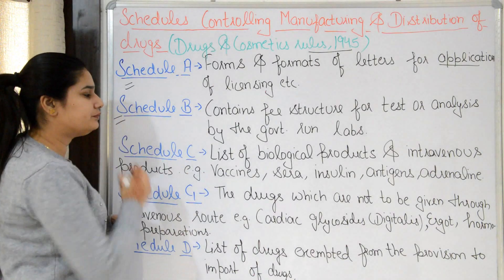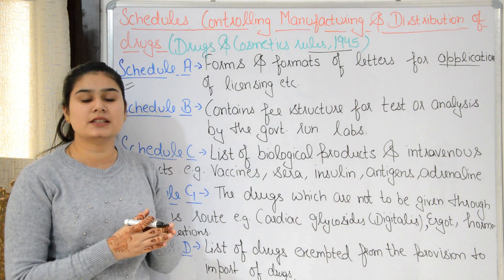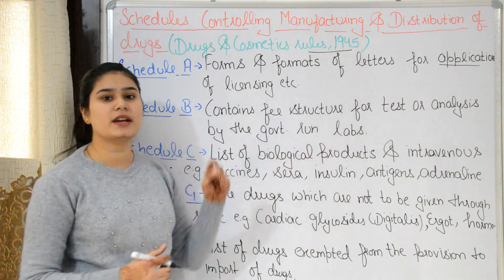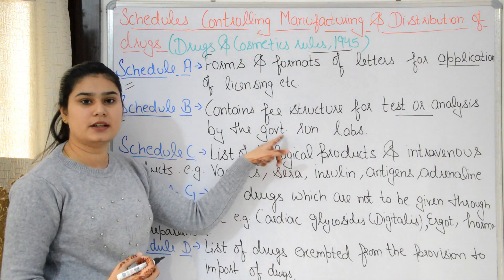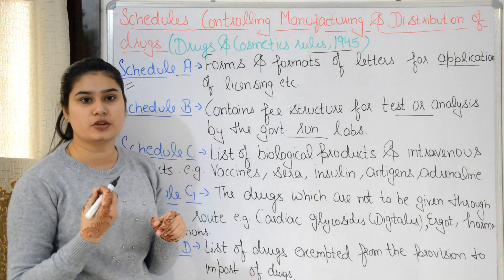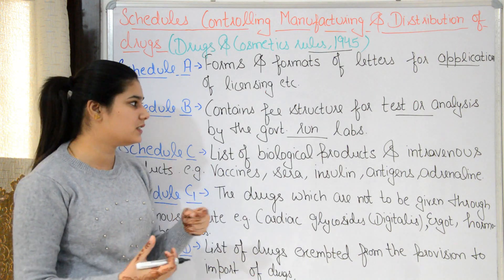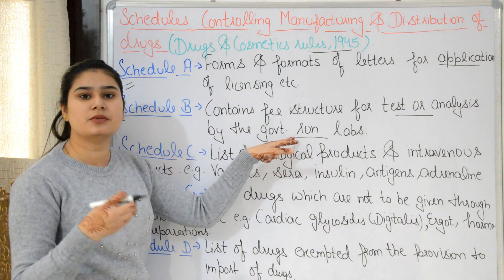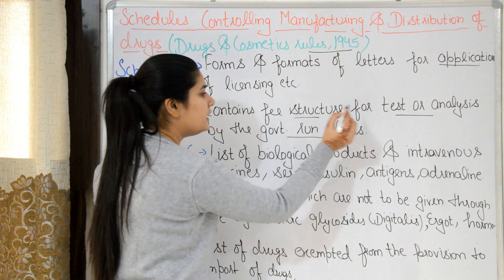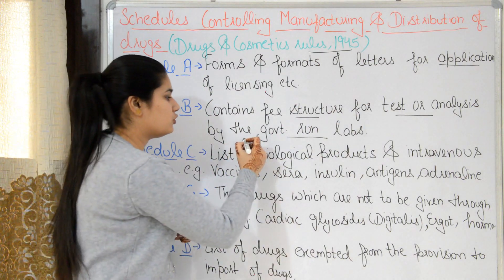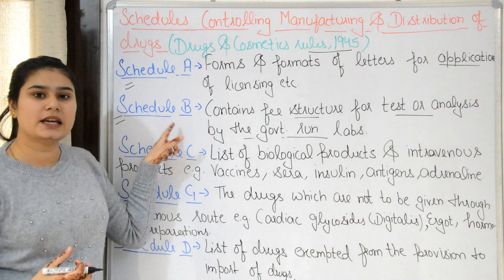Next is Schedule B. Once a license is obtained, the drug goes for testing and analysis. This testing and analysis is done by government-run labs. For different tests on different drugs, a fixed fee structure is defined. This fee structure for test and analysis by government-run labs is in Schedule B.